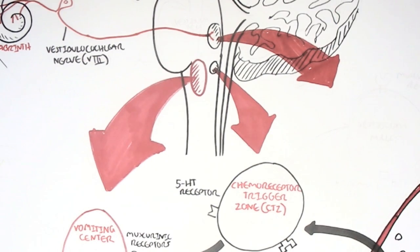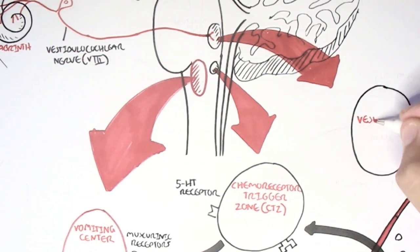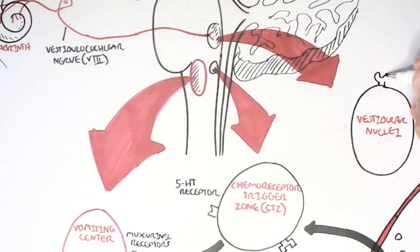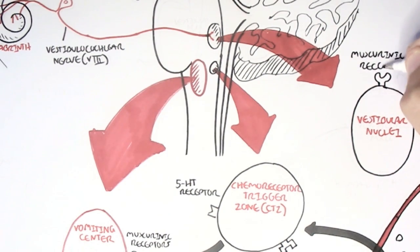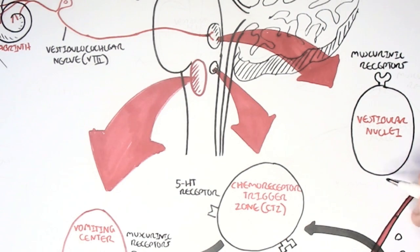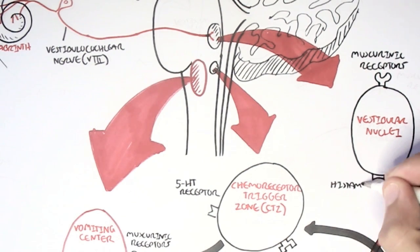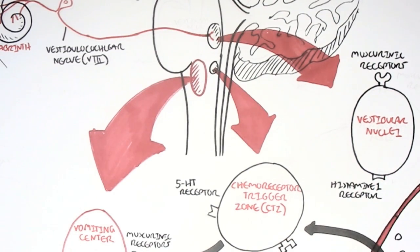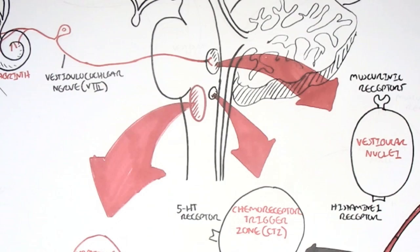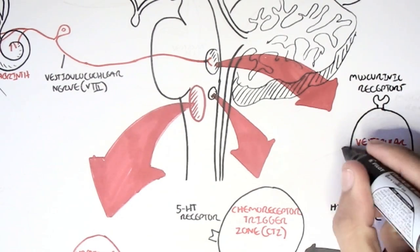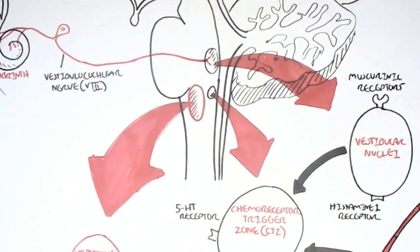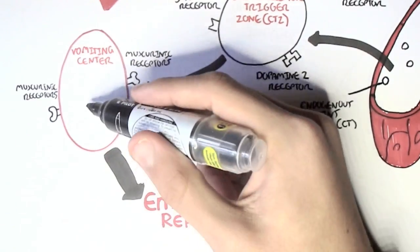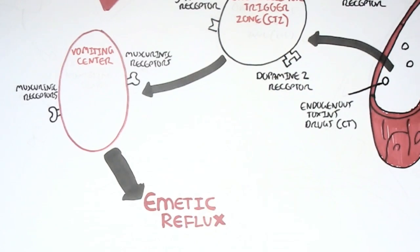Now the vestibular nuclei have muscarinic receptors as well, and also histamine type 1 receptors. And it is activation of these receptors by the vestibular cochlear nerve from the inner ear that will cause the vestibular nuclei to stimulate the chemoreceptor trigger zone, which will then stimulate the vomiting center, and thus the emetic reflex, the act of vomiting.